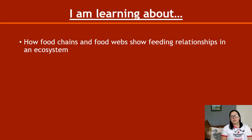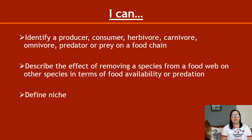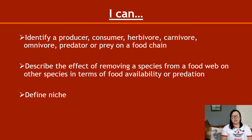We'll be looking first of all at how food chains and food webs show feeding relationships in an ecosystem. By the end of this, you should be able to identify producers, consumers, herbivores, carnivores, omnivores, predator or prey on a food chain. This is something they just expect you to do.